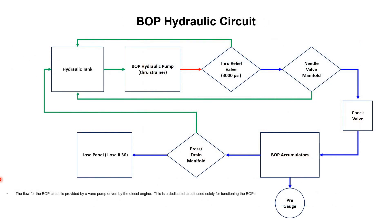Here is the BOP hydraulic circuit. Like all hydraulic circuits, this BOP hydraulic circuit starts from the hydraulic tank. From the hydraulic tank the oil goes to the double vane pump — that is the BOP hydraulic pump — through a strainer, which removes external particles from the hydraulic oil. This double vane pump, or BOP pump, produces a certain pressure. To control this pressure according to requirement, a relief valve is used. The 3000 psi is diverted to the BOP circuit and the extra pressure is relieved back to the hydraulic tank.